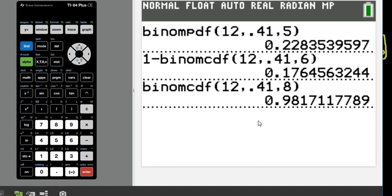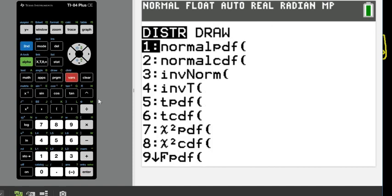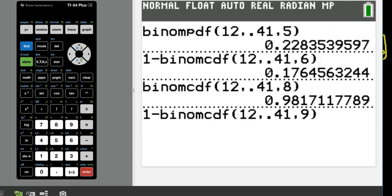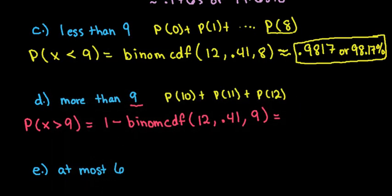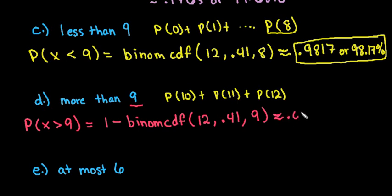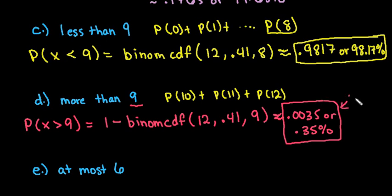Do 1 minus, then ALPHA B for binomCDF, entering 12, 0.41, x = 9. The result is approximately 0.0035, less than 1 percent. In statistics, the threshold for unusual is less than 5 percent, so this result is considered very unusual.